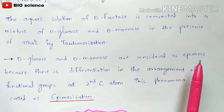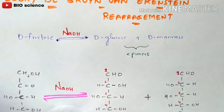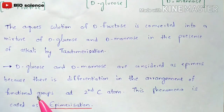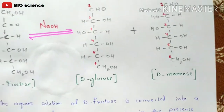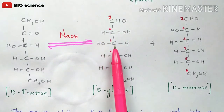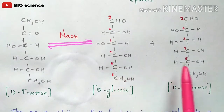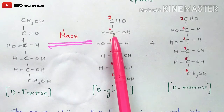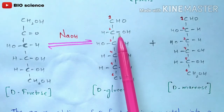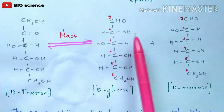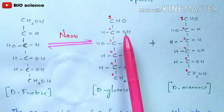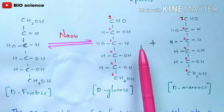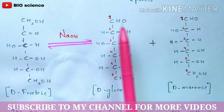D-glucose and D-mannose are considered as epimers. Why are they considered epimers? There is a differentiation in the arrangement of functional groups only at the second carbon atom. In both structures, there are six carbons. At the second carbon, the functional group arrangement is different in glucose versus mannose. In glucose, the OH group is represented towards the right side, but in mannose the OH group is represented towards the left side — only at the second carbon. This process of differentiation is called epimerization, hence both are considered epimers.